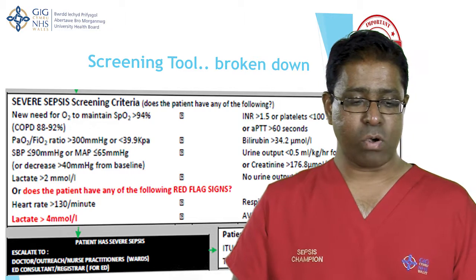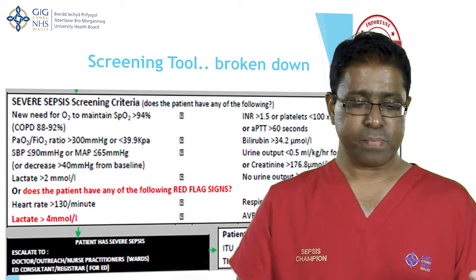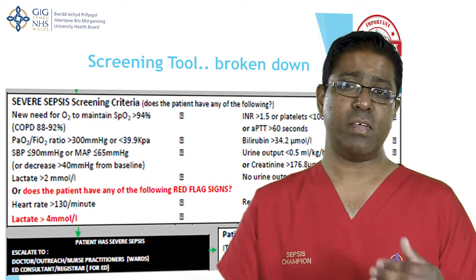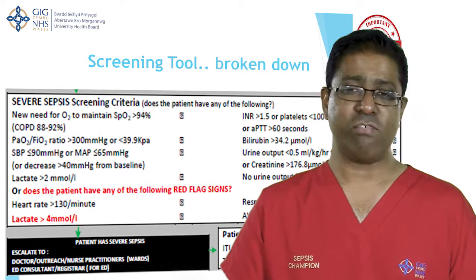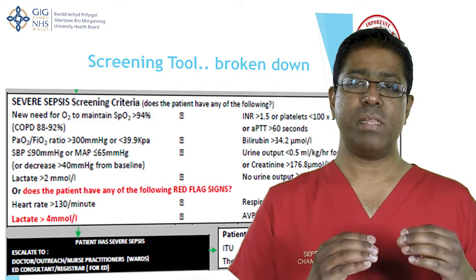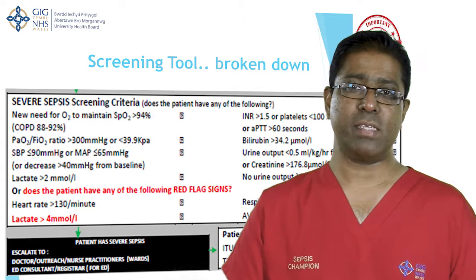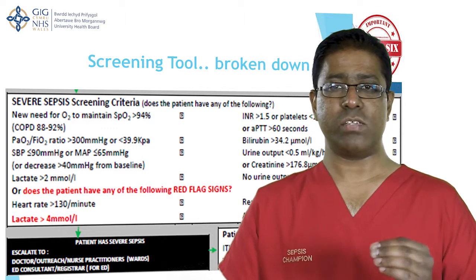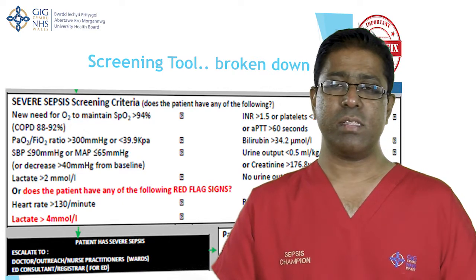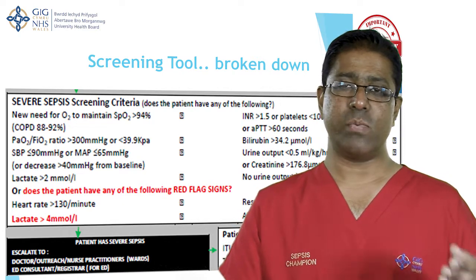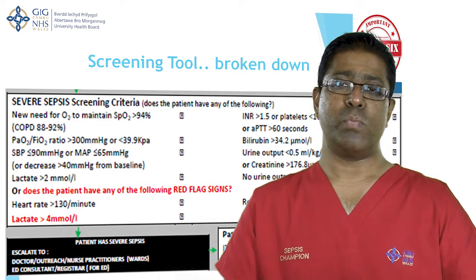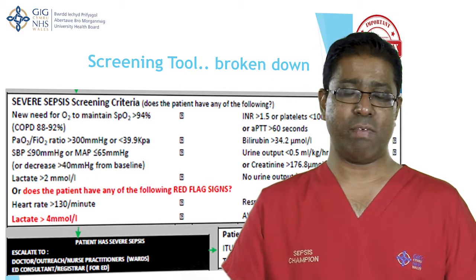In the same box there are red flag signs: heart rate greater than 130, respiratory rate greater than 25, lactate greater than 4, and not being alert. These are categorized separately as red flags because each individually carries a NEWS score of 3. Nursing staff and healthcare workers are being taught to check red flag signs when doing observations as part of the SIRS criteria.